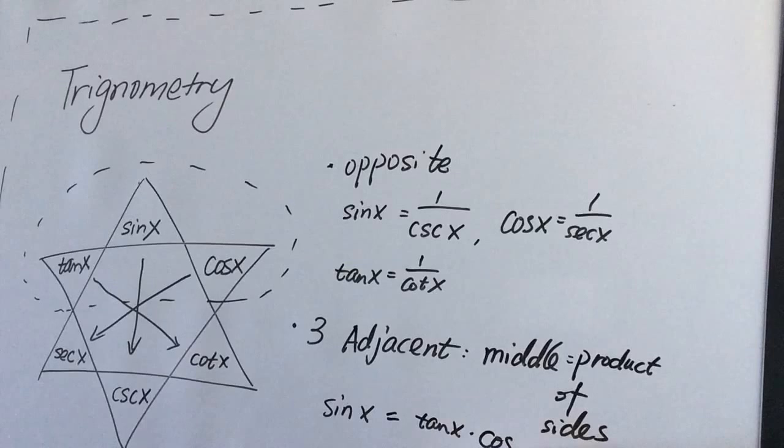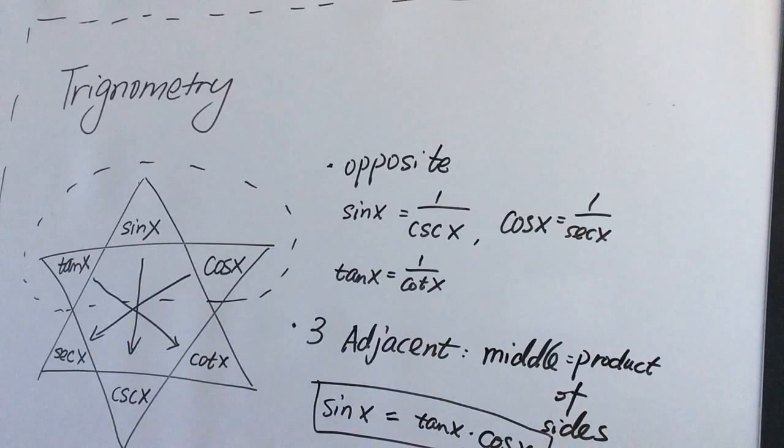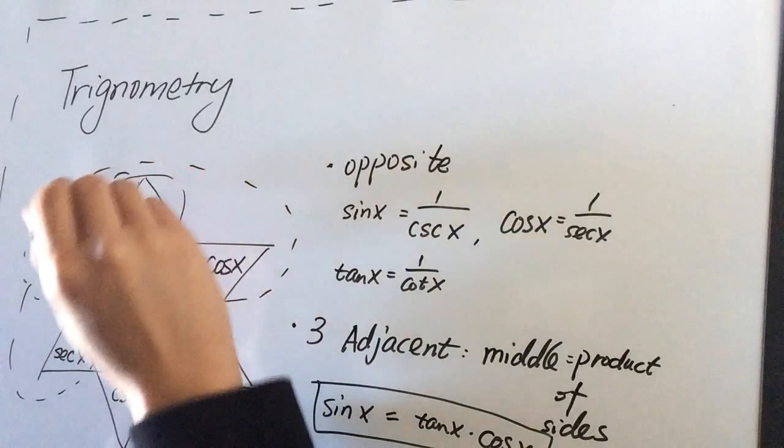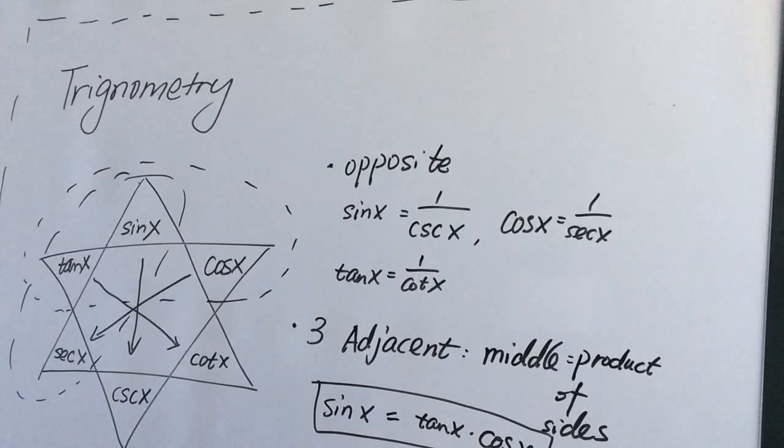And we can do that for others too. For example, we pick this three. We will have tangent x equals secant x times sine x. And any three. You can do whatever you want. And I'll stop now.